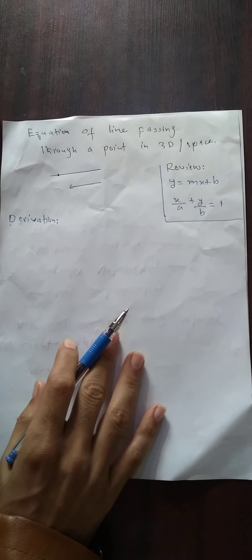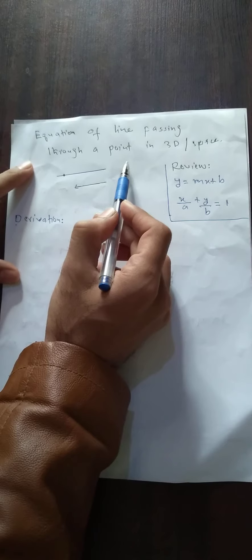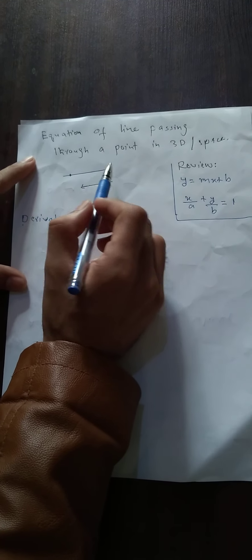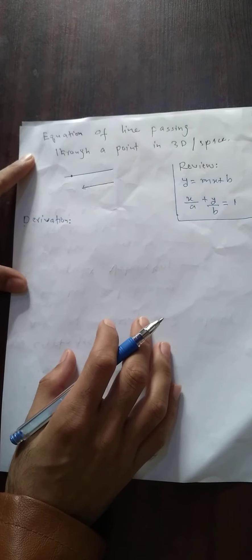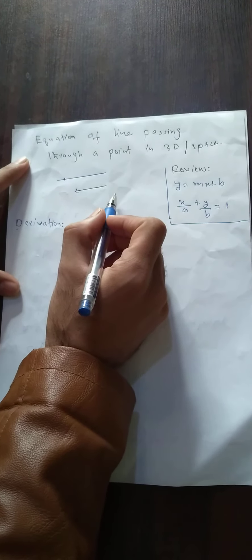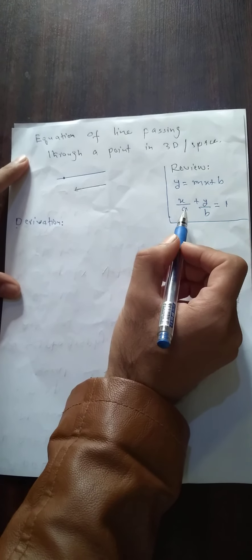Hello and welcome to the ZTECH channel. In today's lecture, number one of the analytical geometry, we will find the equation of the line in 3D — the equation of the line passing through a point in 3D outer space. The most important thing to emphasize is that the line is passing through one point, so we will derive the equation for the line in space.